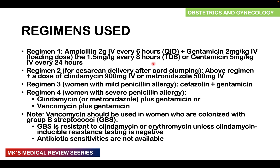For those delivered via cesarean section, after clamping the cord you give the same ampicillin and gentamicin, plus an additional dose of either clindamycin 900 mg IV or metronidazole 500 mg IV. For mild penicillin allergy, substitute cefazolin combined with gentamicin. For severe penicillin allergy, use clindamycin or metronidazole plus gentamicin, or vancomycin plus gentamicin. Vancomycin should be used in women colonized with Group B Streptococcus that is resistant to clindamycin or erythromycin, unless clindamycin inducible resistance testing is negative — and also when antibiotic sensitivities are not available.